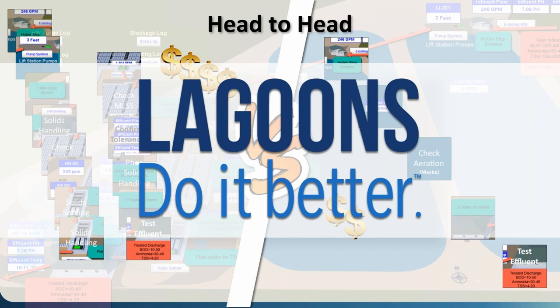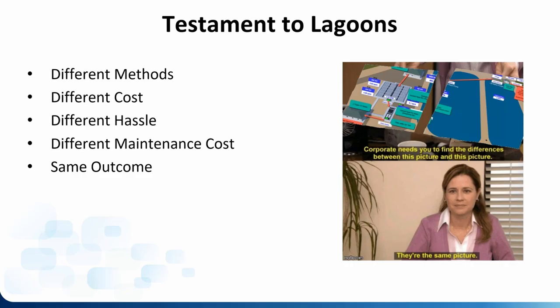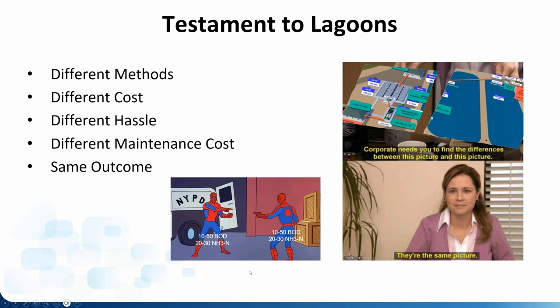This is why we say lagoons do it better — it's simply a better choice for communities that already have wastewater lagoons. Two different plants, different costs, different hassle, different maintenance — and it's literally the same outcome. That activated sludge plant puts out 10 to 50 BOD and 20 to 30 ammonia. A lagoon system can do exactly that — we can hit 10 mg/L BOD and zero ammonia coming out of that same lagoon system without upgrading to activated sludge. This is why we're heavy advocates for wastewater lagoons.